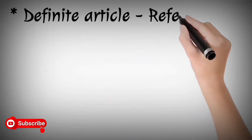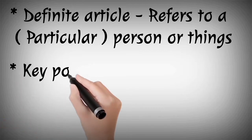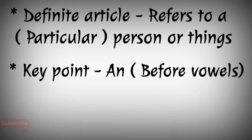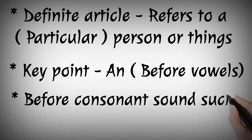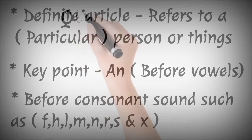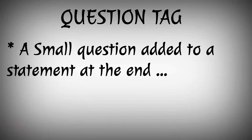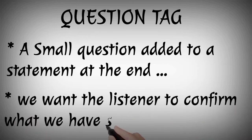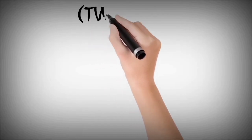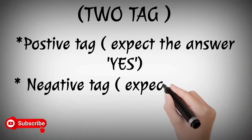Indefinite articles are used before vowels — we use 'An' before vowels. There is also the question tag. The question tag is a little tag added to confirm something. There are two types of tags: positive tags, where the expected answer is yes, and negative tags, where the expected answer is no.